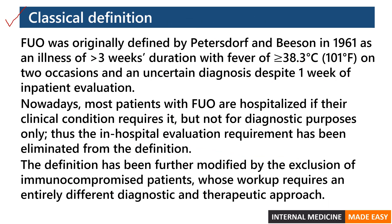Fever of unknown origin was originally defined by Petersdorf and Bisson in 1961 as an illness of more than three weeks duration with fever of 38.3 degrees Celsius or more on two occasions, and an uncertain diagnosis despite one week of inpatient evaluation. The key points are: illness of more than three weeks duration, fever on two occasions, and the patient hospitalized for one week with the diagnosis still uncertain. Nowadays, the in-hospital evaluation requirement has been eliminated from the definition, as most patients are hospitalized only if their clinical condition requires it.